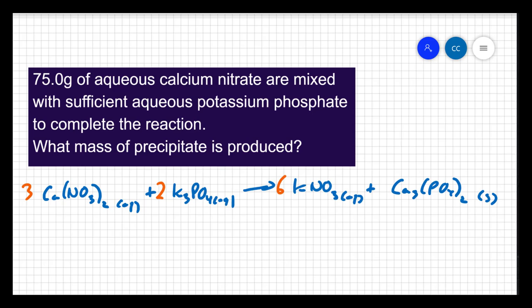The next step is to convert my 75 grams of calcium nitrate into moles. The molar mass of calcium nitrate is, for every one mole, you have 164.086 grams. So 75 grams divided by the molar mass gives us 0.457 moles of the calcium nitrate.